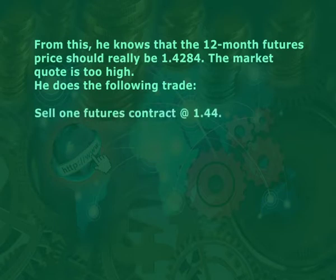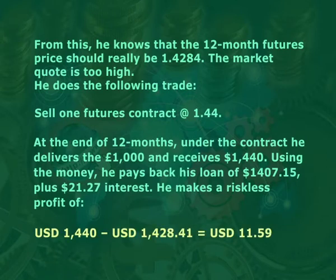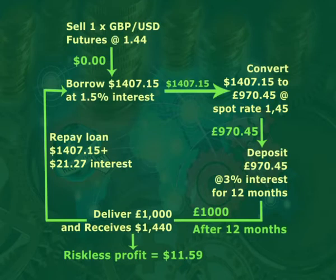He does the following trade: sell one futures contract at 1.44, and create the synthetic futures deal as discussed. At the end of 12 months, under the contract he delivers 1,000 pounds and receives $1,440. Using the money, he pays back his loan of $1,407.15 plus $21.27 interest. He makes a riskless profit of $1,440 minus $1,428.41, giving a profit of $11.59. Notice that the arbitrator did not take any market risk — there was no exchange rate risk and no interest rate risk. The deal was independent of both and the trader knew the profit from the outset. The cash flows are shown on the screen.